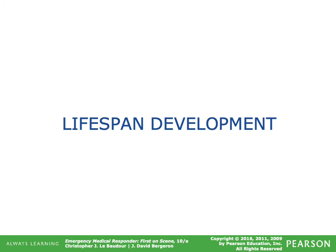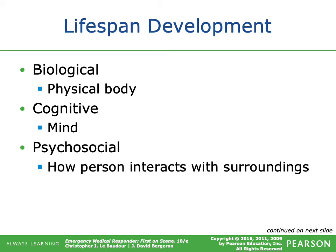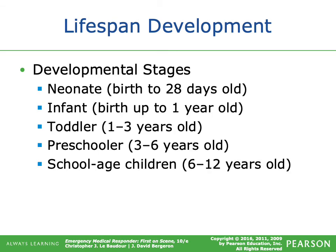Now we're moving into lifespan development. The biological portion involves the physical body; cognitive includes the mind; psycho-social involves how a person interacts with their surroundings. Different stages of development are: neonate (birth to 28 days), infant (birth to one year), toddler (one to three years), preschool (three to six years old), and school age (six to 12 years). Make sure you commit these stages to memory.